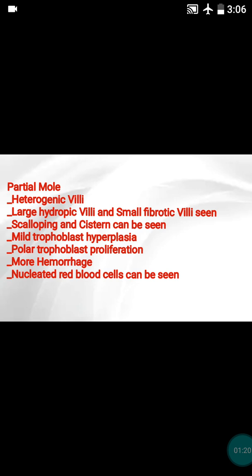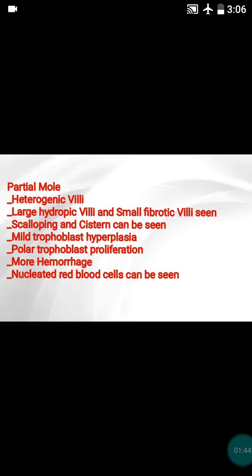Let's see the important features of the partial hydatidiform mole. In this form of mole, the fetus is usually present, so you can see fetal parts. You can see some normal villi and some villi are hydropic, so there will be heterogeneity in the villi — some are very large and some are very small. You can see some form of scalloping in the villi by trophoblastic proliferation. Cisterns can be seen, and there will be mild trophoblastic hyperplasia — not marked.